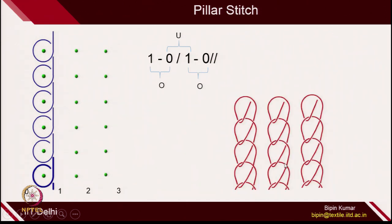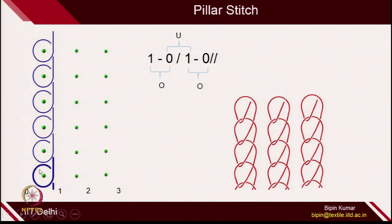If all the guides are doing exactly the same movement, it will be difficult to create a fabric structure, because none of the loops connect with the loops of other columns or courses. If the loops of one needle are not connecting with the loops of other needles, practically the fabric cannot be made. Each individual wale is separate, and if they are separate, they cannot provide you a fabric — these wales must be connected together.